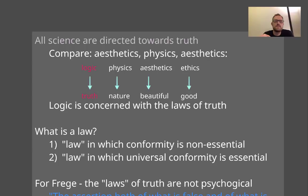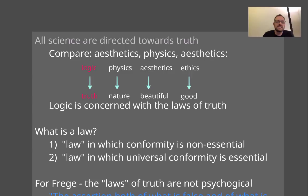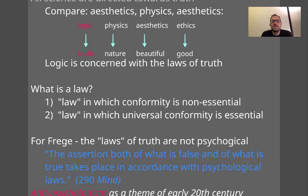The other way to talk about laws is when we talk about laws of nature — laws in which universal conformity is essential. For instance, the law of conservation of energy is a natural law in the sense that no one can break it. Everyone and all motion is governed according to that principle. So you have these two types of laws. The laws of truth are not psychological — they're not simply derived from the fact that the mind works the way it does. The assertion of both what is false and what is true takes place in accordance with psychological laws, so that first sense of law would be a sort of psychologism.